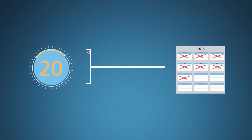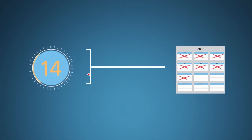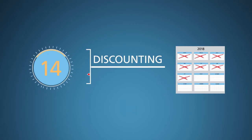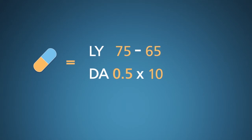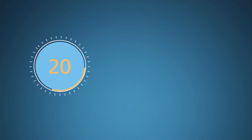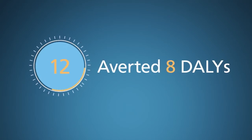Usually, we adjust DALY estimates for timing, meaning we treat future events as having less value from today's perspective because we aren't as concerned with the future as we are with the present. This adjustment is known as discounting. Keep it in mind because it can significantly reduce the DALY burden of early mortality. For now, we'll stick to exploring undiscounted DALYs. And what if a diabetes care intervention extended life by 5 years and reduced the duration of disability from 10 years to 4? Then the LY — life years lost — would be 10 instead of 15, and the DA — disability adjustment — would be 2 instead of 5. Added up, that yields 12 DALYs instead of 20, meaning we've averted 8 DALYs through this intervention. That is the health benefit of the intervention.